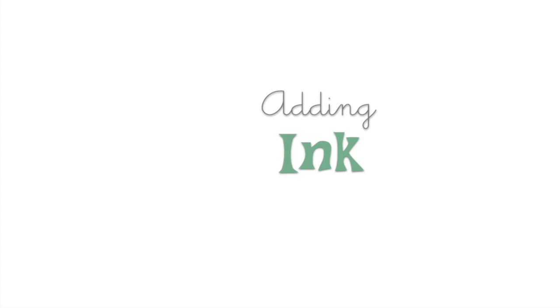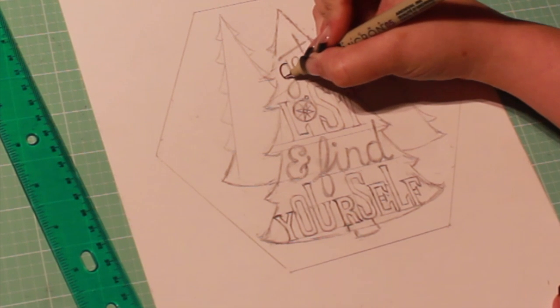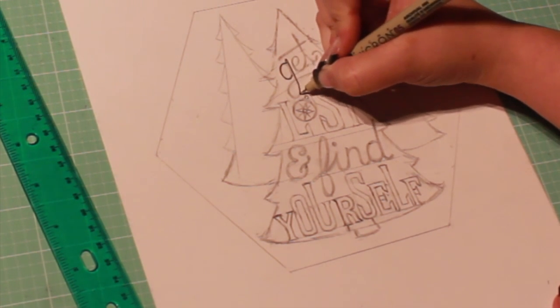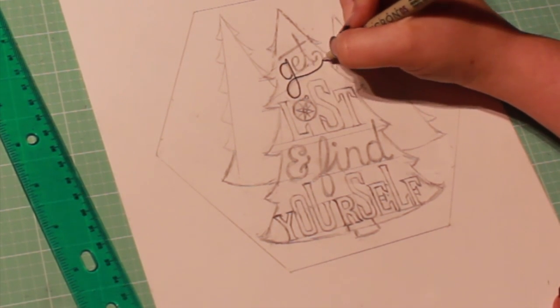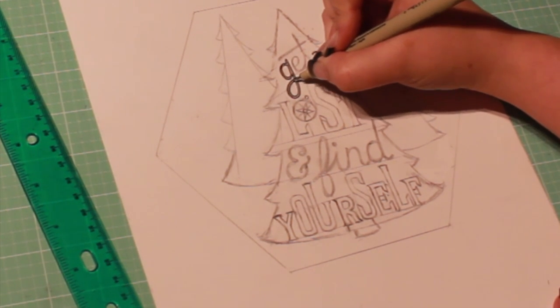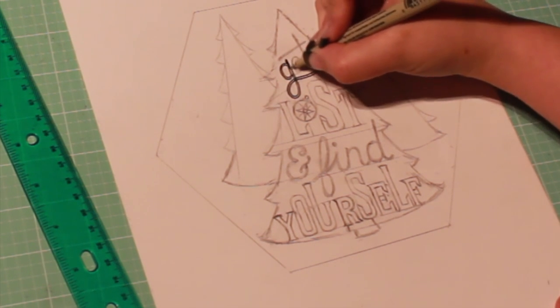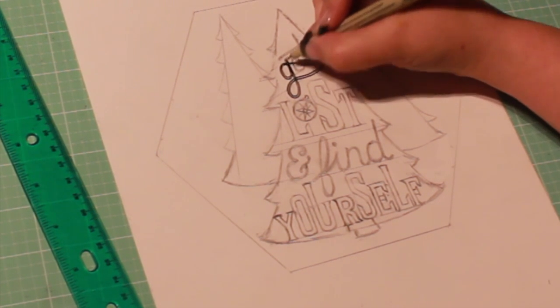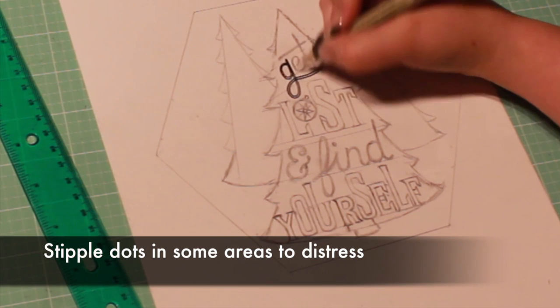Once you're happy with your design, it's time to ink it. Slowly trace your design with the pen. Take it slow and don't hesitate to stop and turn the paper if it gives you a better angle for tracing. I'm giving my letters a distressed finish by stippling some areas.